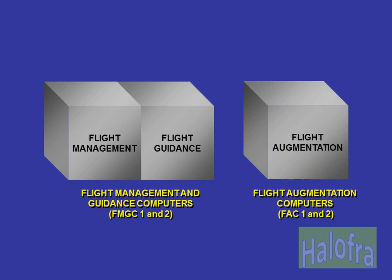The AFS is divided into four main parts: Flight Management, Flight Guidance, Flight Augmentation, and Fault Isolation and Detection System. The first two functions are performed by the FMGCs. The last two functions are performed by the FACs.